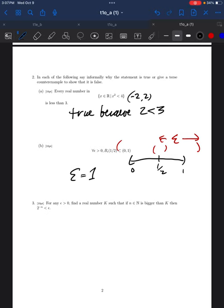So question 3, I want you to notice that what I did was break down a piece of the limit definition. For any epsilon, find a real number k so that if n in the natural numbers is bigger than k, then 2 to the minus n is less than epsilon.